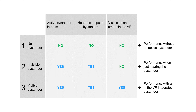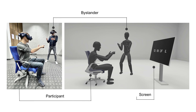The visible-bystander condition extended the last condition by visualizing the bystander including their movements as an avatar in VR. Here you can see the virtual environment of the visible-bystander condition. The participant's and the bystander's arm, finger, and head movements were virtually and physically at the same position, similar to the chair. These movements were stabilized with an inverse kinematics technique and synchronized via line.